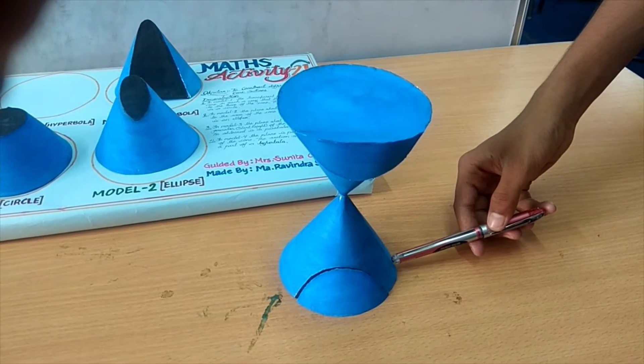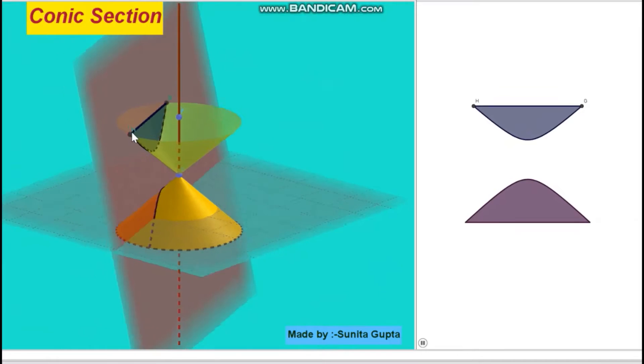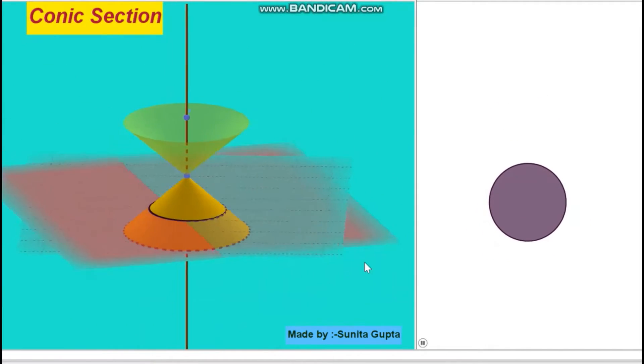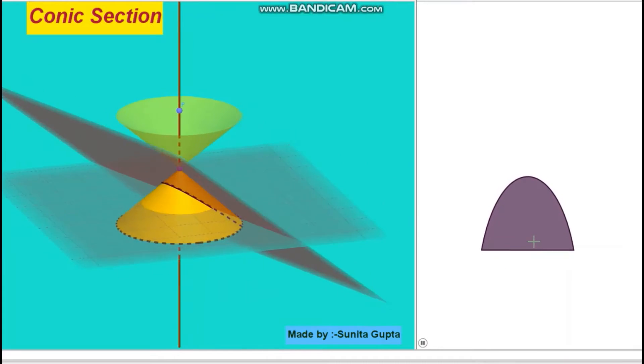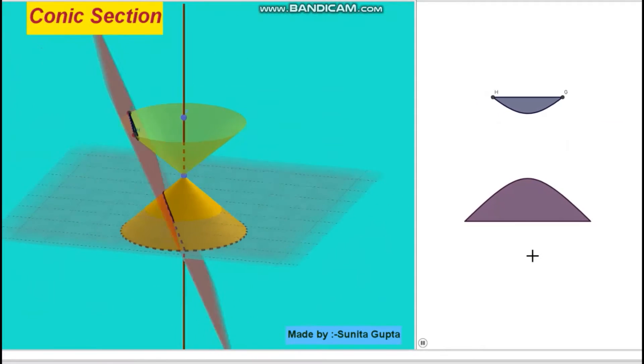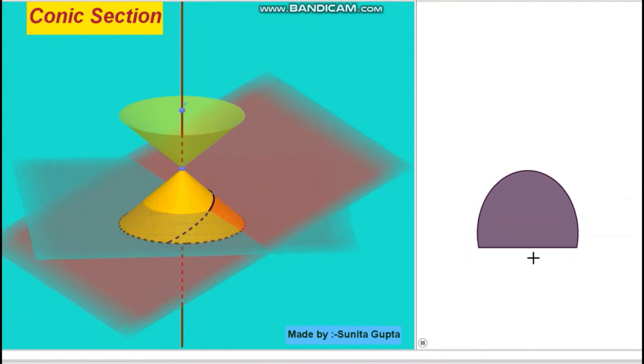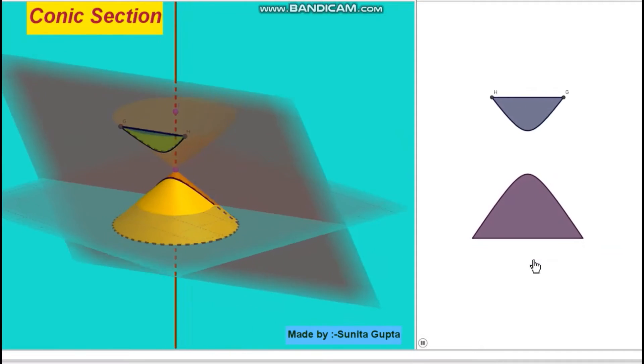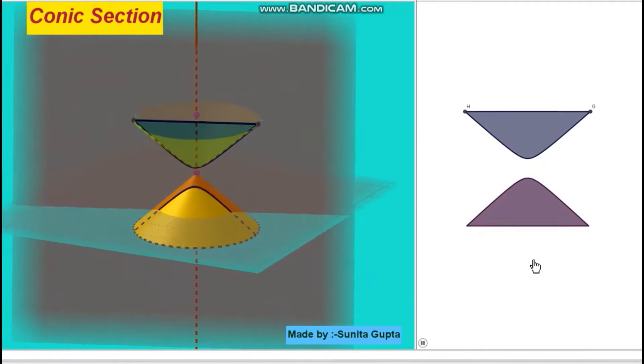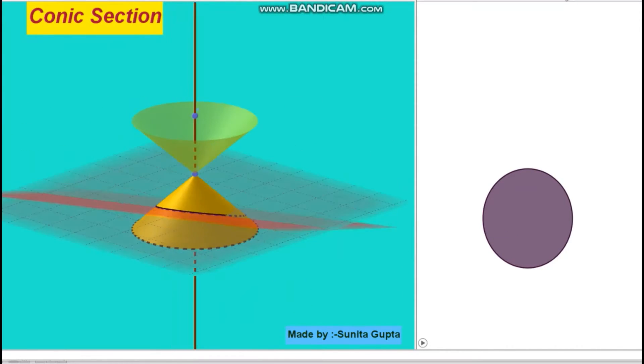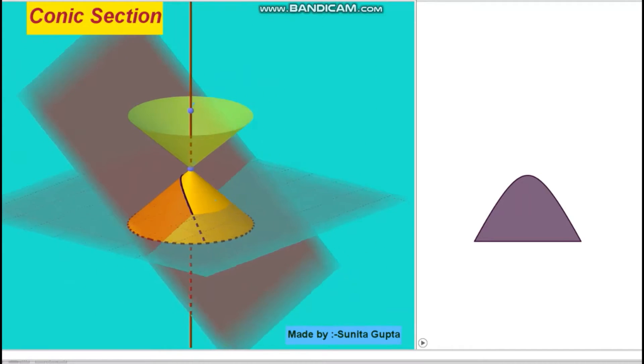If we take the intersection of a plane with a cone, the section so obtained is called a conic section. As shown on the screen, we obtain different kinds of conic sections depending upon the position of the plane with respect to the cone, such as circle, ellipse, parabola, and hyperbola.